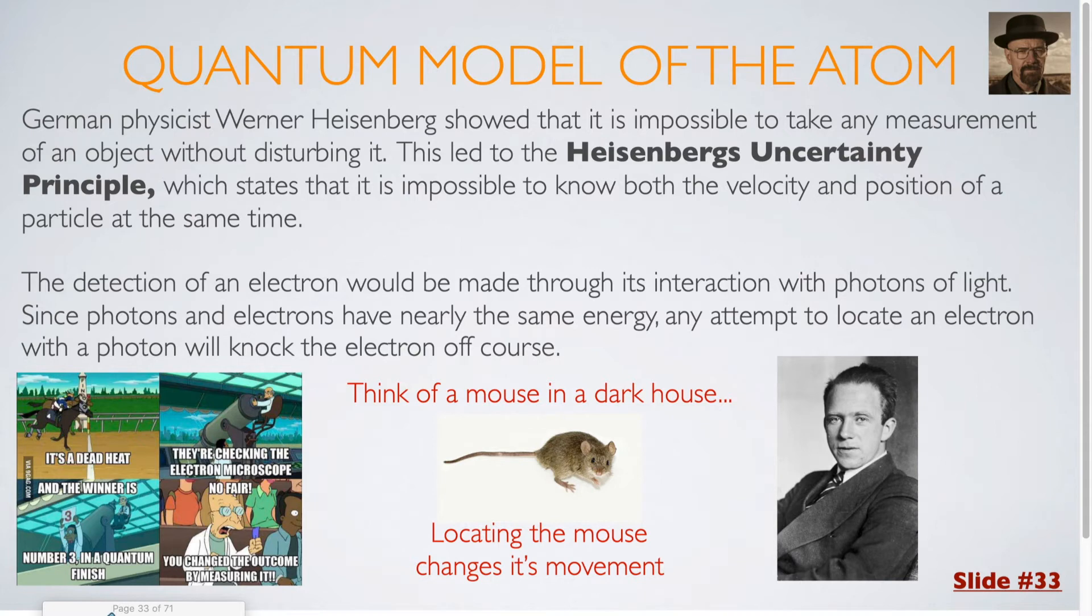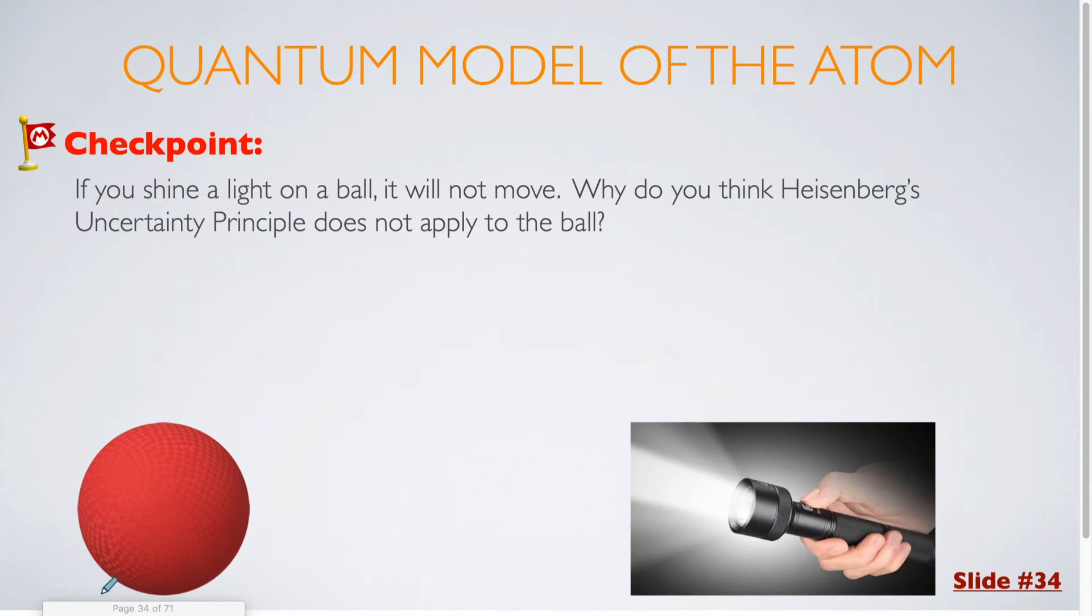You can think of this as similar to an analogy with a mouse within a dark house. If you flip on the light switch and startle the mouse, you are going to change its location. For our next checkpoint question, if you shine a light on a ball, it will not move. Why do you think Heisenberg's uncertainty principle does not apply to the ball?